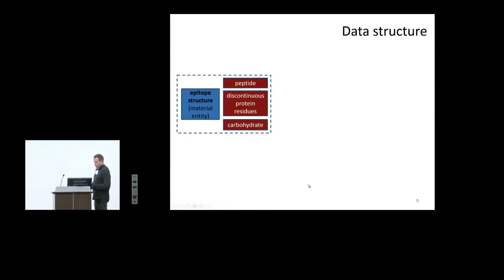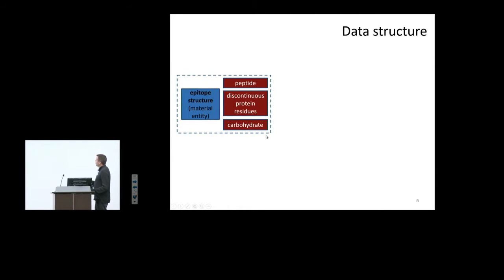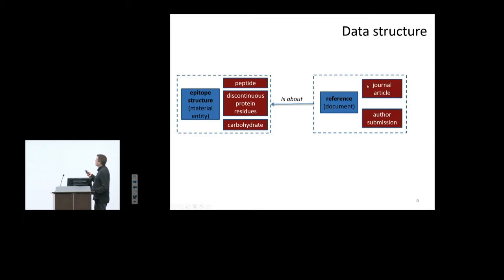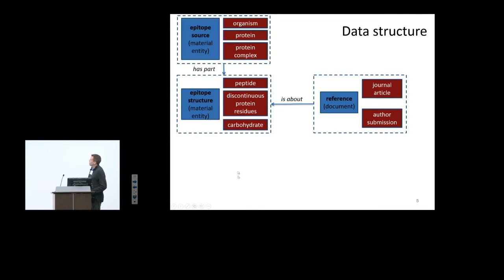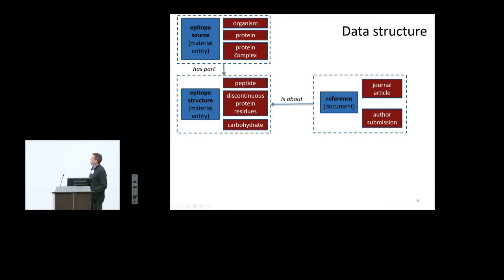That required quite a lot of work in defining our data structure. The high-level information we capture includes: first, the epitope itself — which could be a peptide, discontinuous residues on a protein surface, or a non-peptidic molecule like a carbohydrate. There must be some information source, with the vast majority coming from curated journal articles, plus author submissions. Typically an epitope is part of an organism such as a virus or bacteria and a specific protein, or for antibodies, it could span multiple proteins at a complex interface.